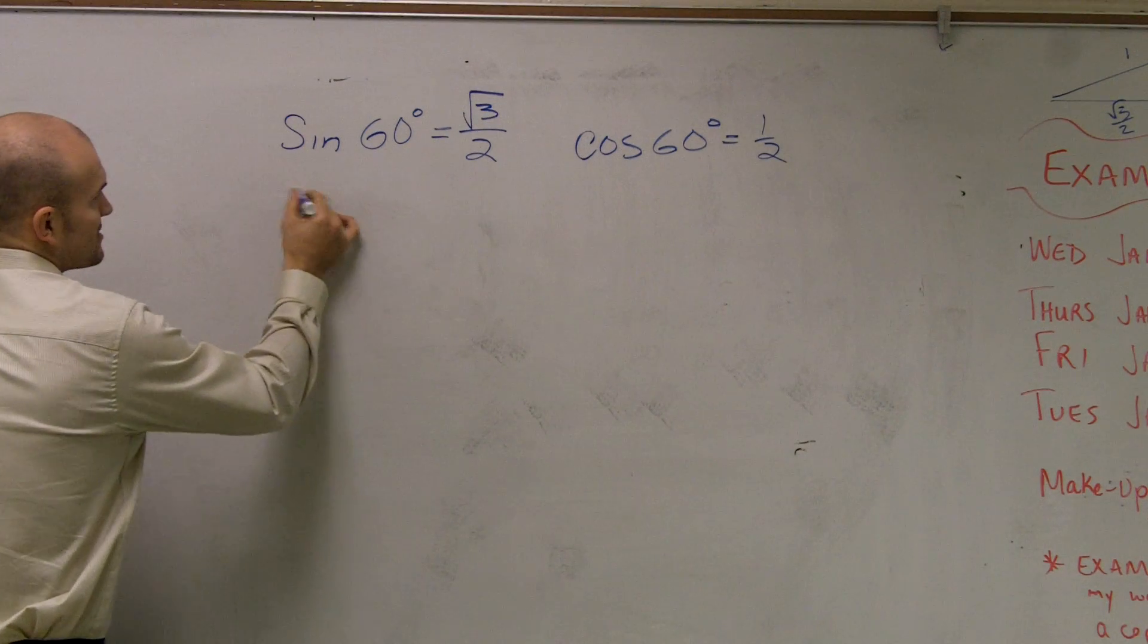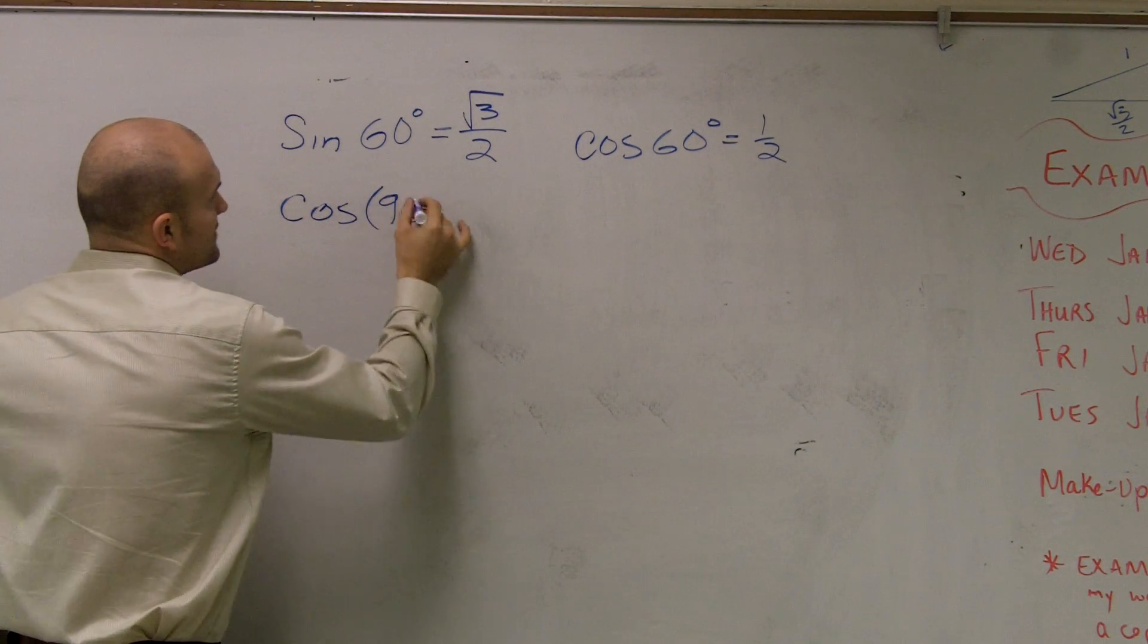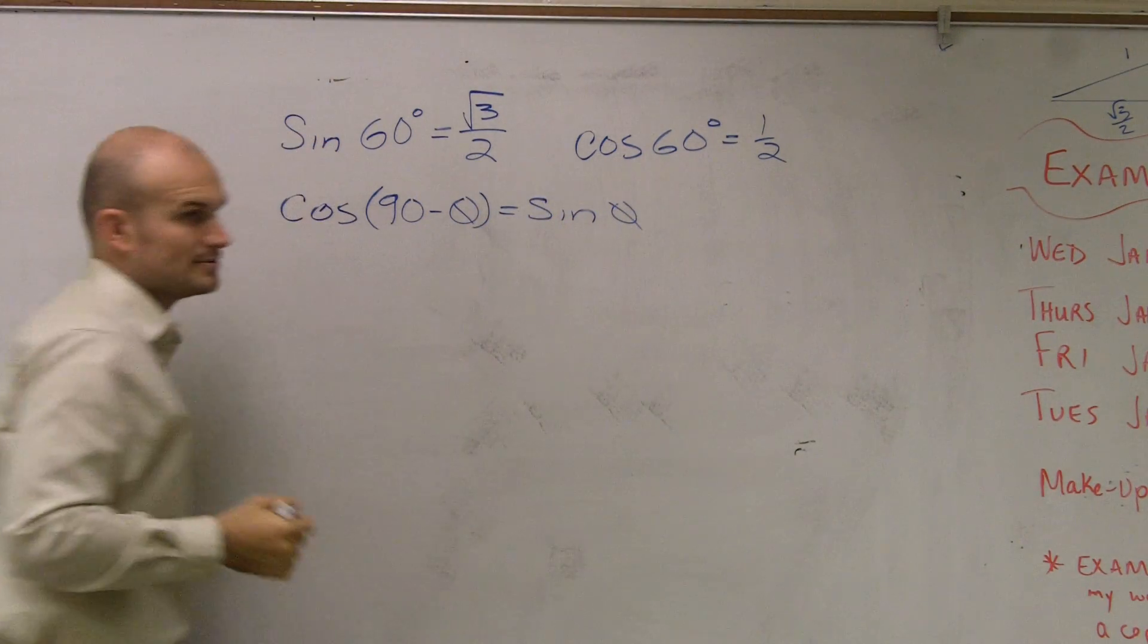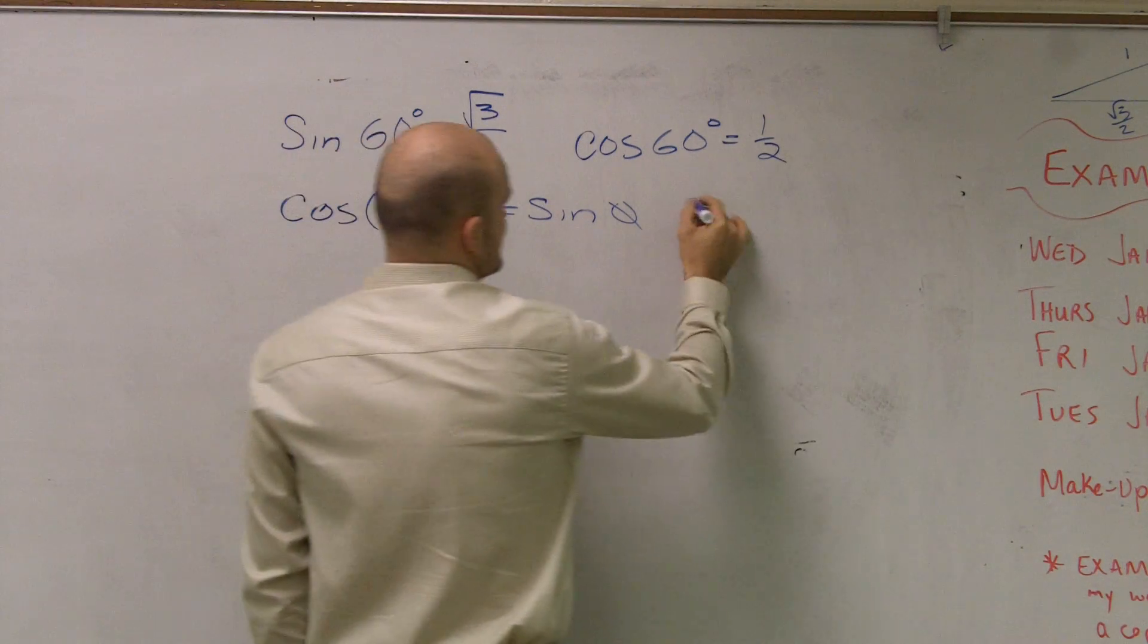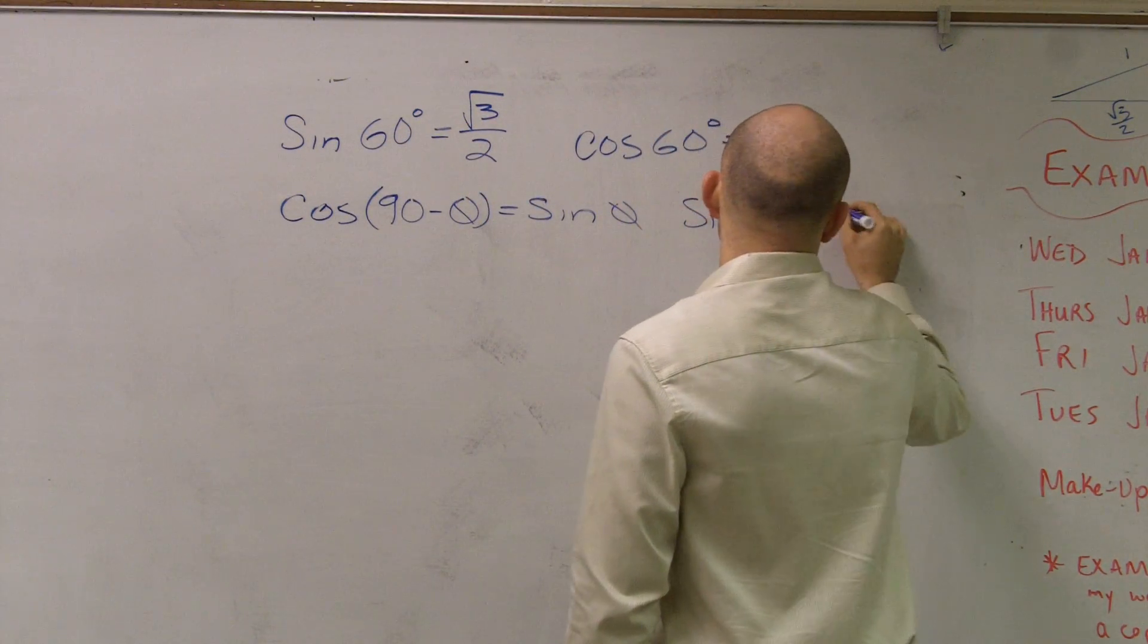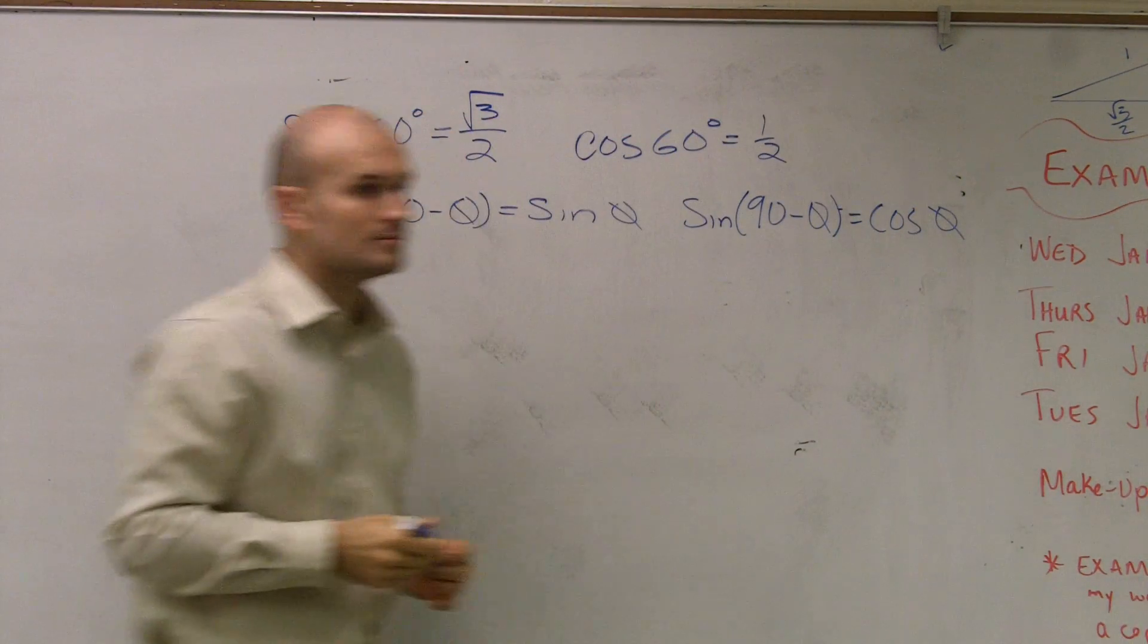So what I'm saying is we need to understand that cosine of 90 minus theta is equal to sine of theta. And we also need to know that sine of 90 minus theta is equal to cosine of theta.